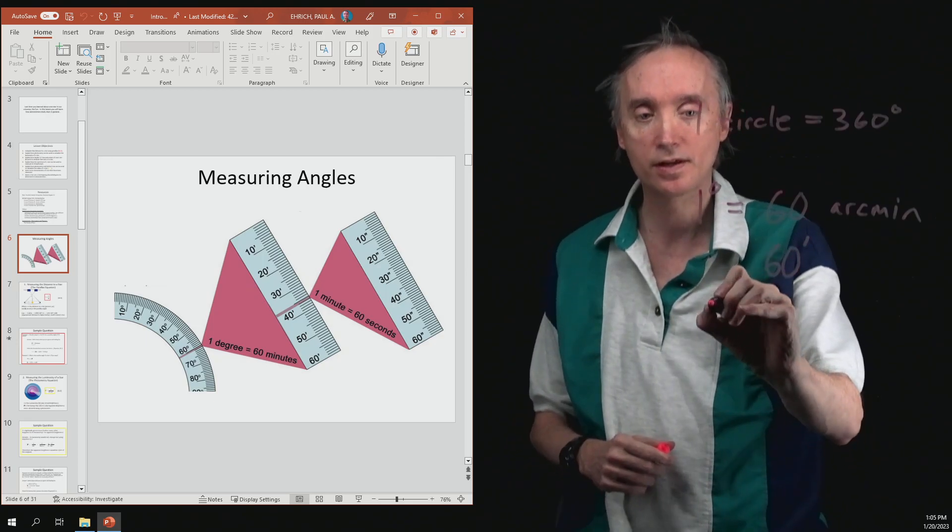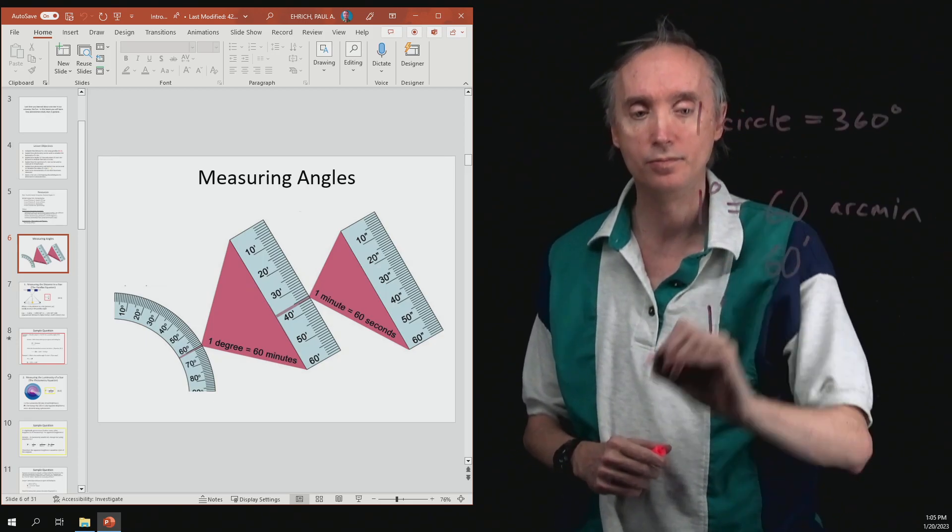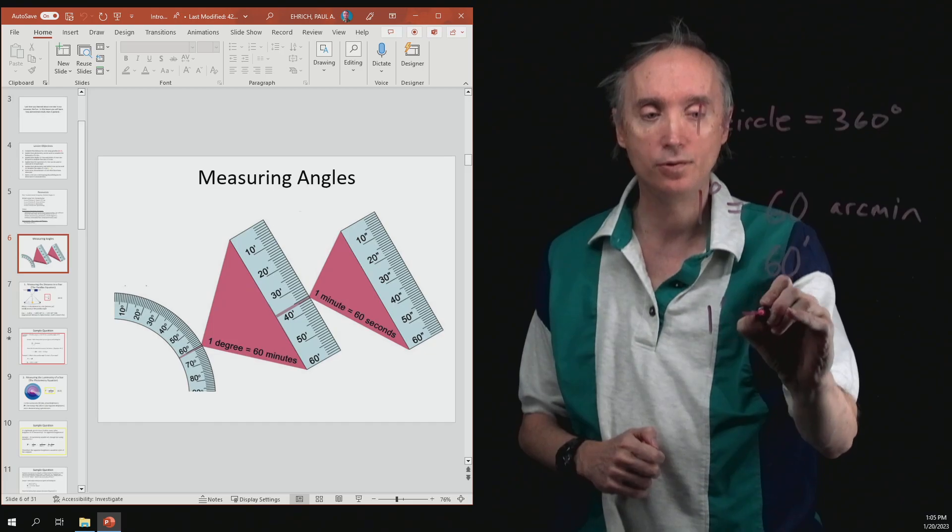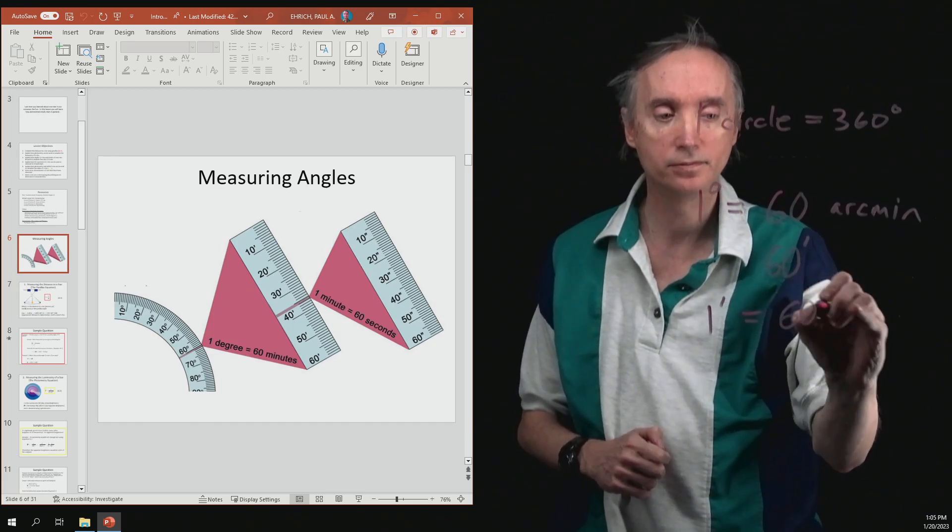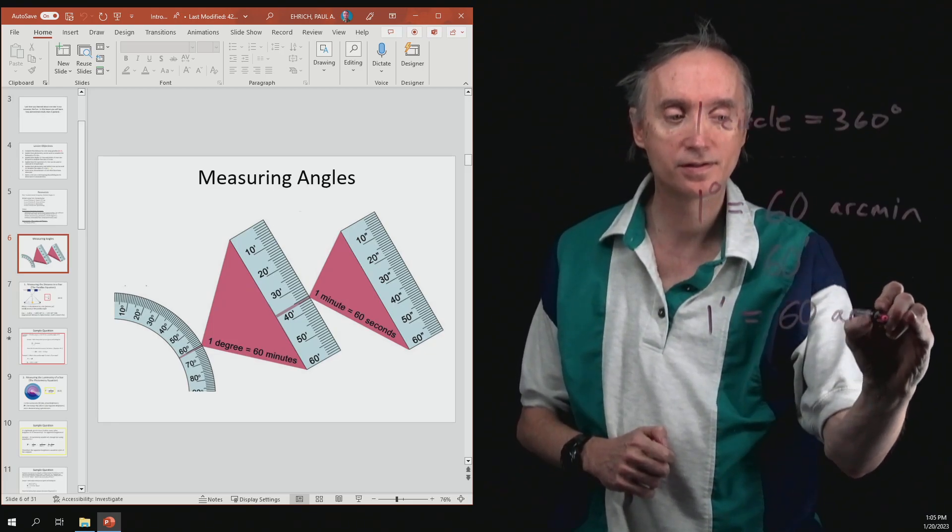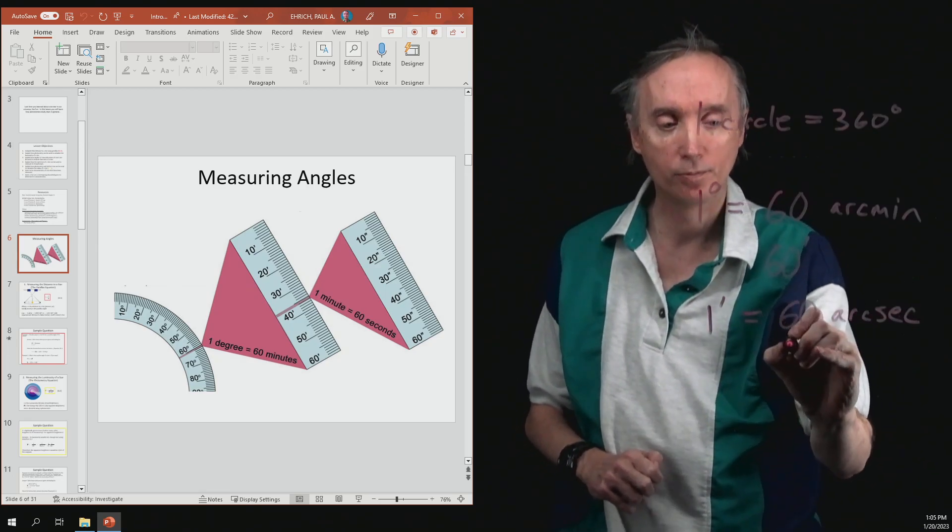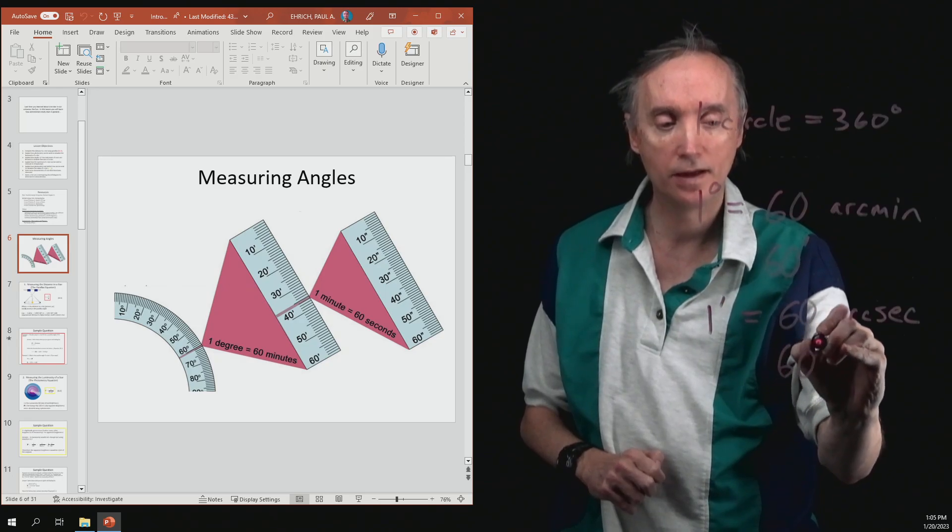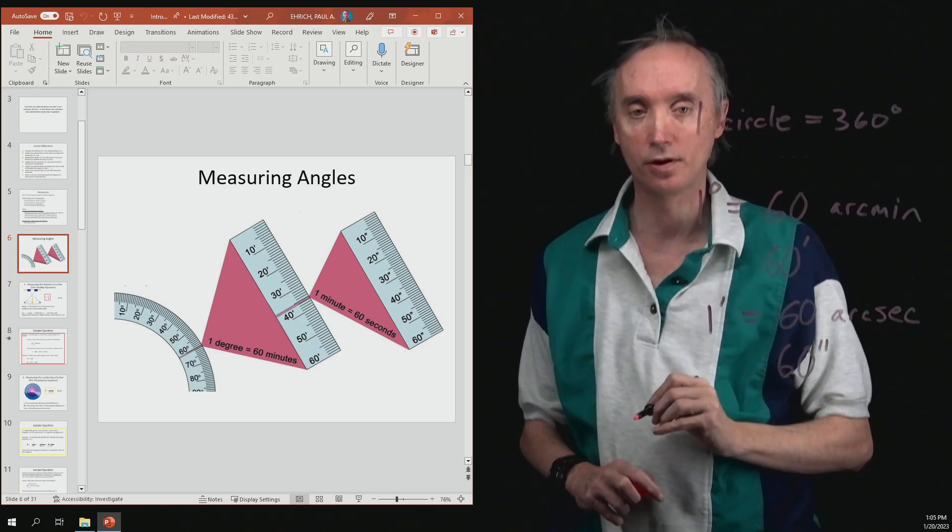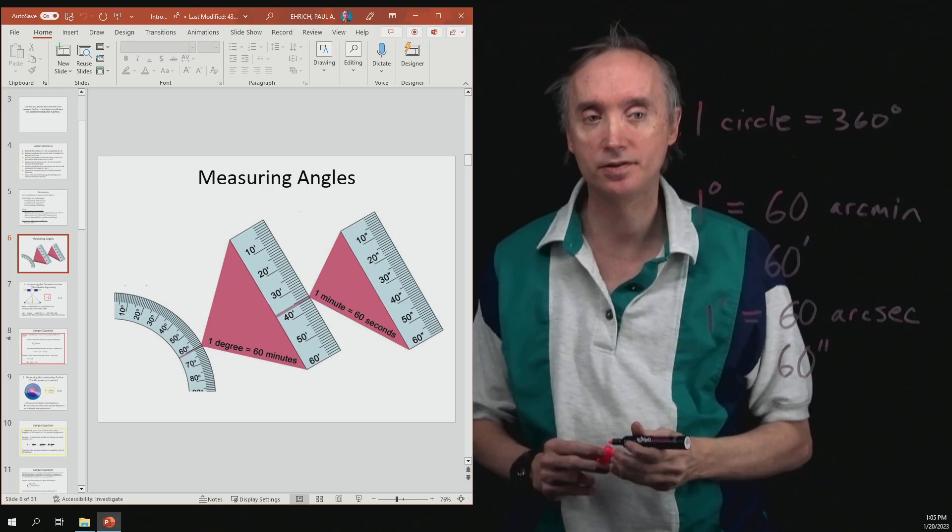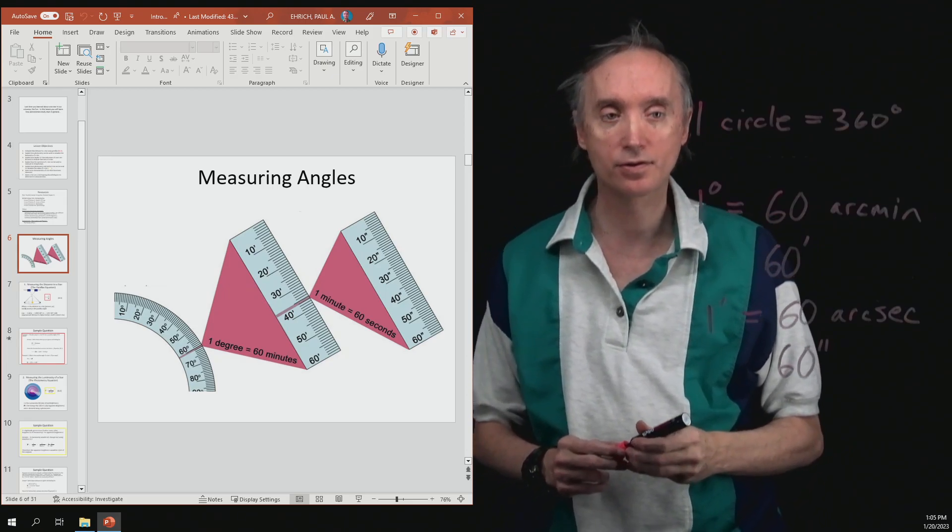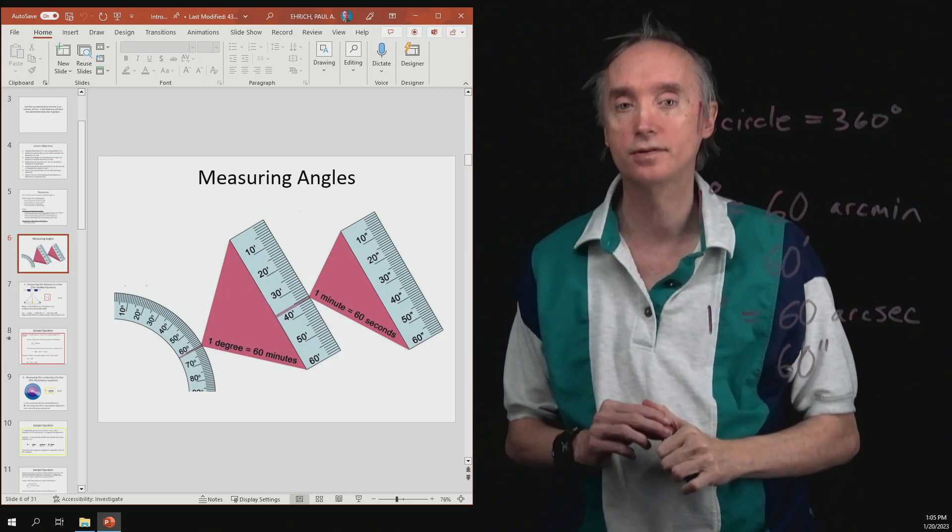So we could say that 1 arc minute equals 60 arc seconds. But we could abbreviate that and say 60 and then put a double tick mark. So any time you see a double tick mark, that's going to stand for arc seconds.